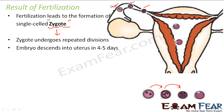The fertilization process starts in the fallopian tube, and from there to implantation in the uterus takes around 4 to 5 days. Once the embryo moves into the uterus, it finally implants itself in the wall of the uterus, forming specialized tissue-like structures. The embryo keeps on growing and gradually becomes a fetus, which continues growing for 9 months, after which it is born as a baby.